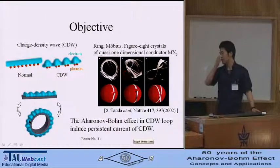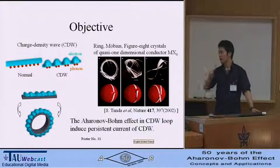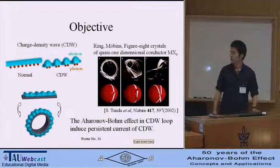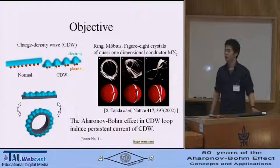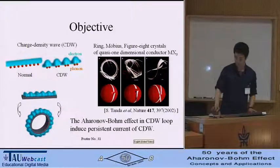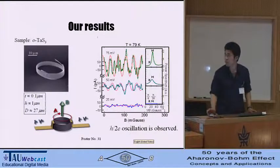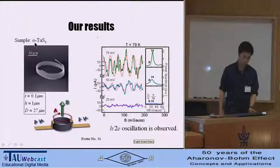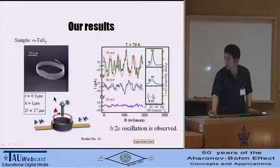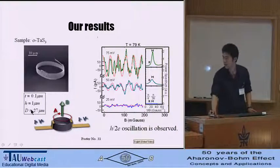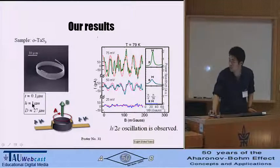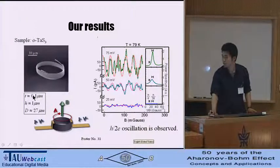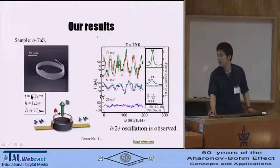These crystals are suitable for experiments of topological quantum effects, namely the Aharonov-Bohm (AV) effects. We prepared the sample — tantalum Torristal (TaS₃) crystals — by chemical vapor transportation method. The dimension is 27 µm in diameter and 1 × 0.1 µm in cross-section area.